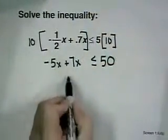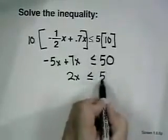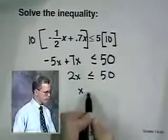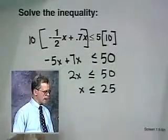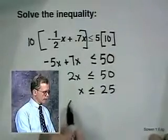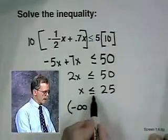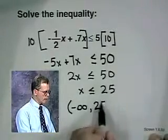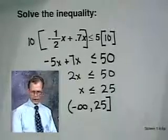Here's the rest of the solution. Combining like terms, 2x is less than or equal to 50. Dividing both sides by 2, x is less than or equal to 25. If x is less than or equal to 25, the interval solution would be everything from negative infinity up to and including 25. And so we'll put a square bracket on the end of that problem.